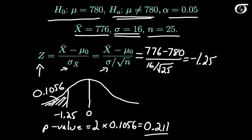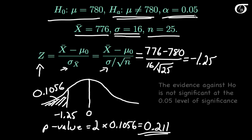We can say that the evidence against the null hypothesis is significant if the p-value is less than or equal to the given value of alpha. But our p-value of 0.211 is greater than the given alpha level. And so the evidence against the null hypothesis is not significant at an alpha level of 0.05. We do not have significant evidence that the population mean differs from 780 grams.